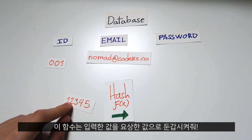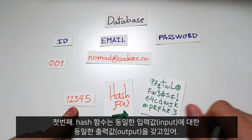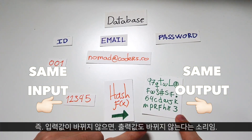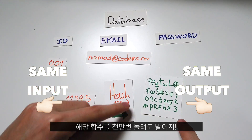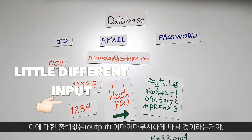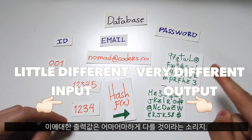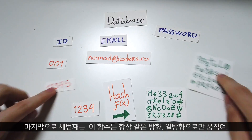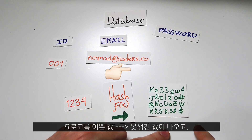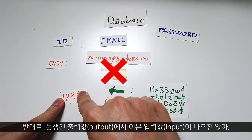A hash function takes an input and returns a really crazy output. There are three things that are very important about hash functions. First, hash functions return the same output with the same input — that means that if the input doesn't change, the output is not going to change, even if you run this function 1 million times. Second, even if the input changes a little bit, the output is going to change a lot — so even if the only difference between two inputs is a single number, the output changes really, really much. Third, hash functions only work one way: with a pretty input you get an ugly output, but if you have the ugly output, you cannot get back the pretty input.